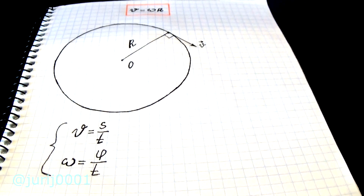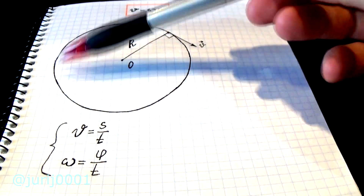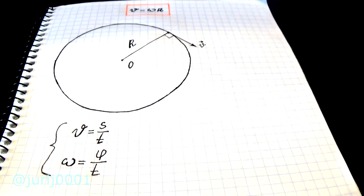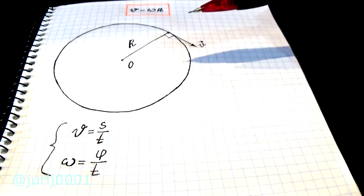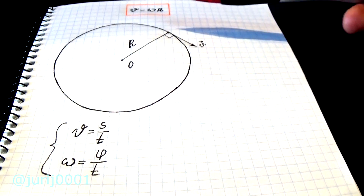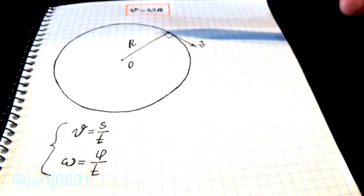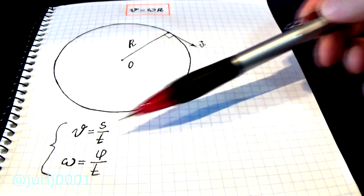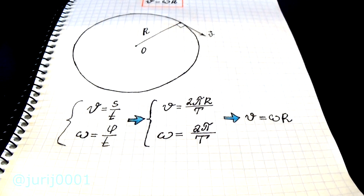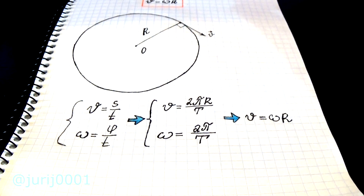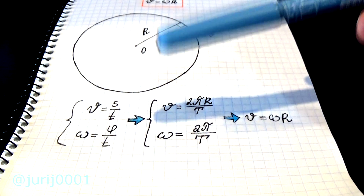In our case the entire path is the length of a circle. The full path time is a period, and the angle is 360 degrees, but in the SI system the angle is measured in radians. So one full path is 2π radians. The path length is 2π radians and the time is equal to the period. As a result we got the formula we know.